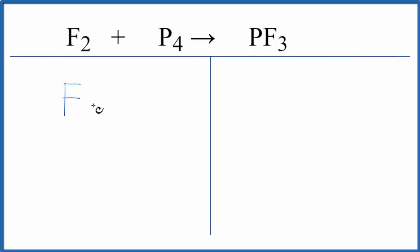We have two fluorines and four phosphorus on the reactant side. On the product side, we have three fluorines and just one phosphorus.